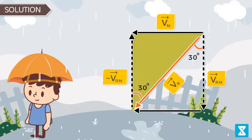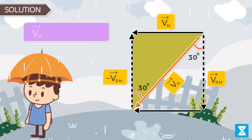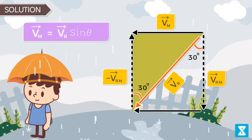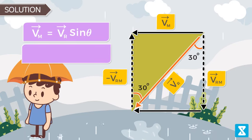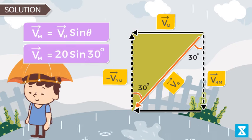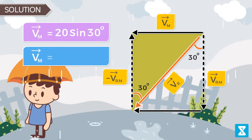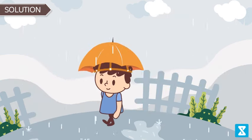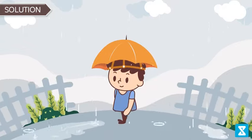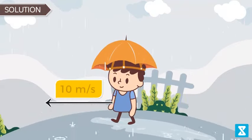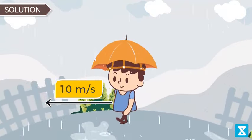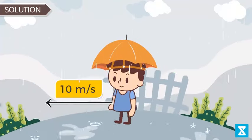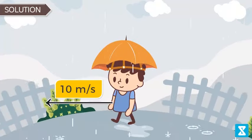The magnitude of v_m can be found from the vector triangle: v_m equals v_r times sine(theta). Putting in the values of v_r and sine(30°) gives us the velocity of the man equal to 10 meters per second. Thus, if the man runs with a velocity of 10 meters per second in the left direction, the umbrella hat will save him from getting wet.